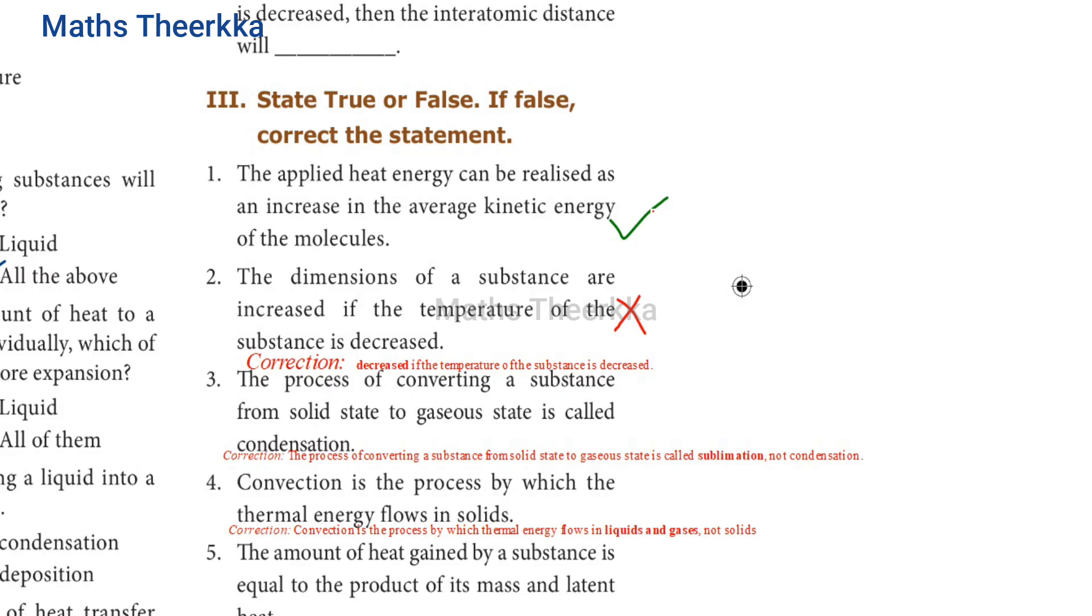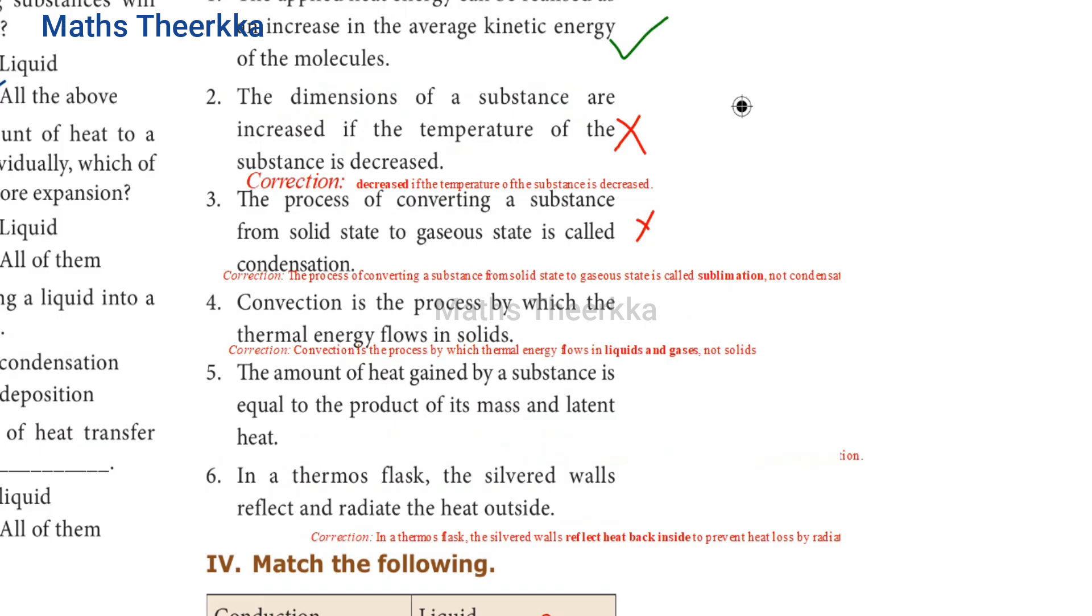Third one. The process of converting a substance from solid state to gaseous state is called condensation. The answer is false because the process of converting a substance from solid state to gaseous state is called sublimation, not condensation.